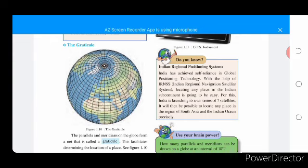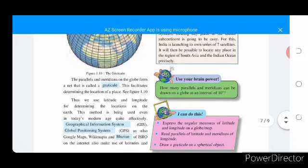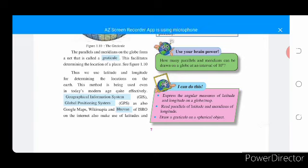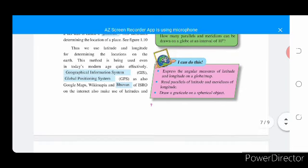Use your brain power. How many parallels and meridians can be drawn on the globe at the interval of 10 degrees? I can do this: express the angular measures of latitude and longitude on the globe or map, read parallels of latitude or meridians of longitude, draw graticules on a spherical object.